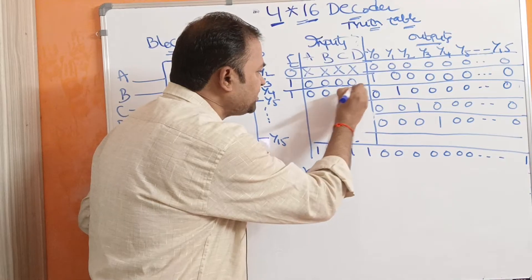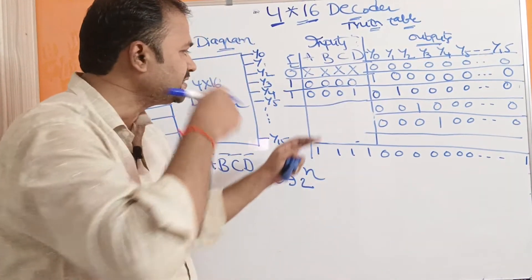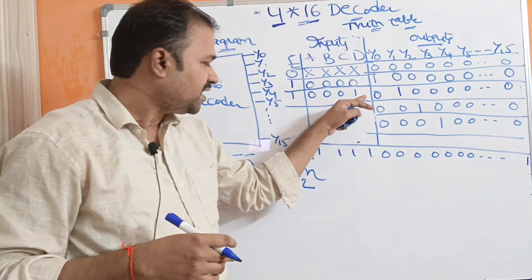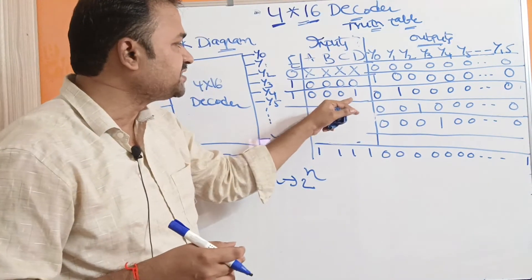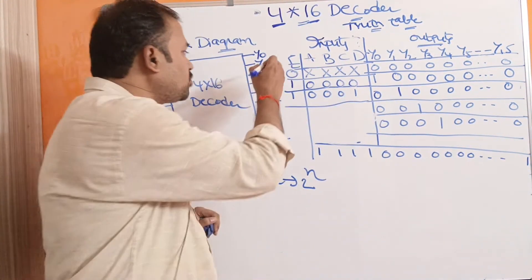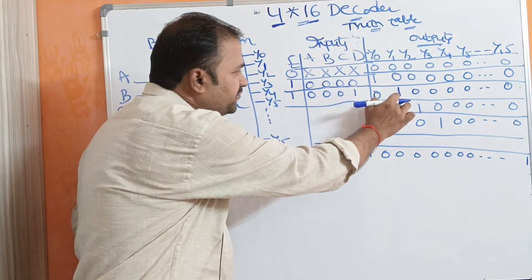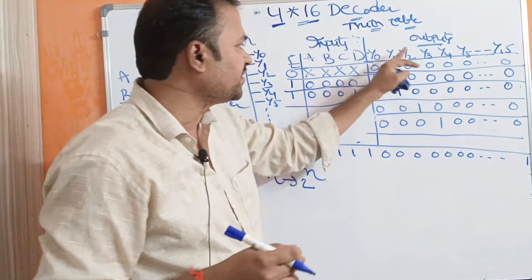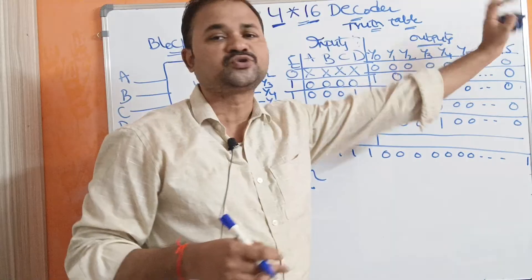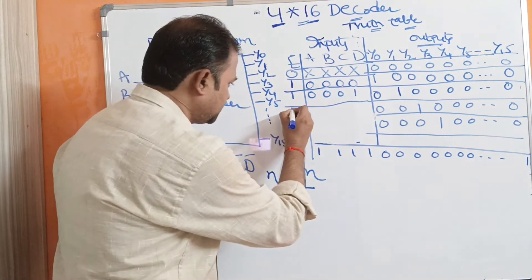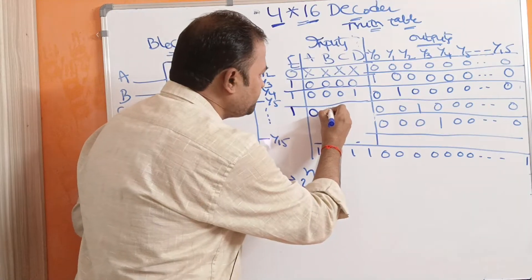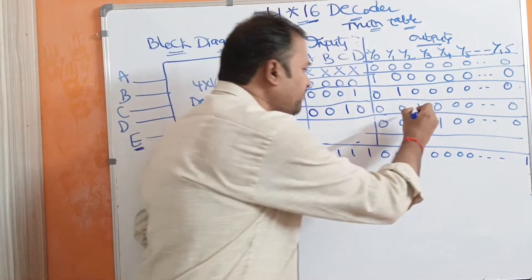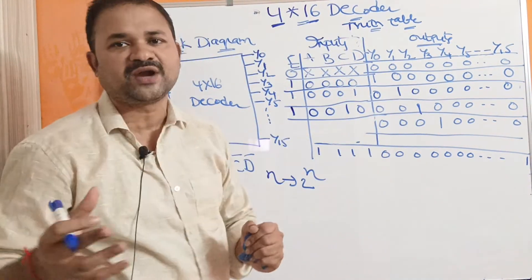If the inputs are 0001 — which is decimal 1 — then the decoder's output Y1 is active, whereas the remaining outputs are inactive. If the inputs are 0010, then the decoder's output Y2 is active, whereas the remaining output lines are inactive.